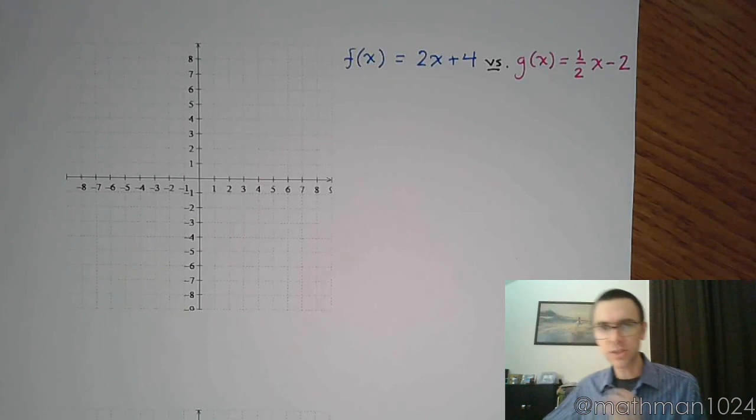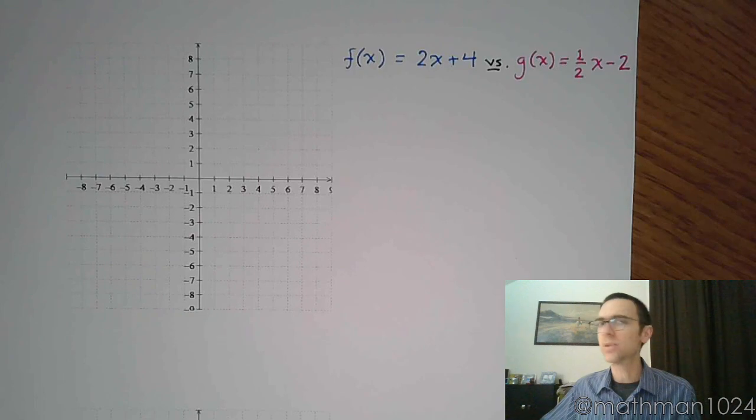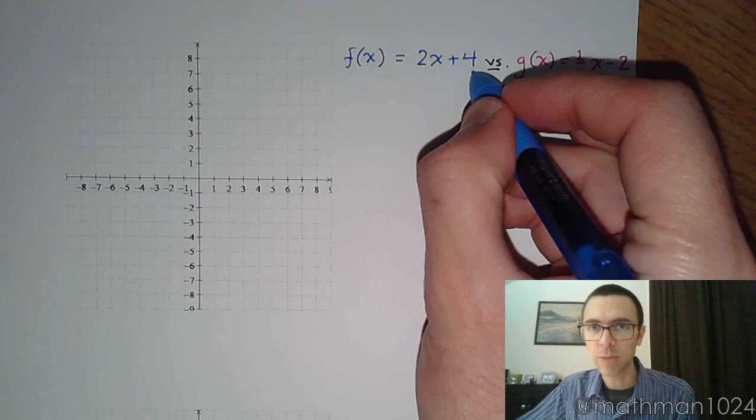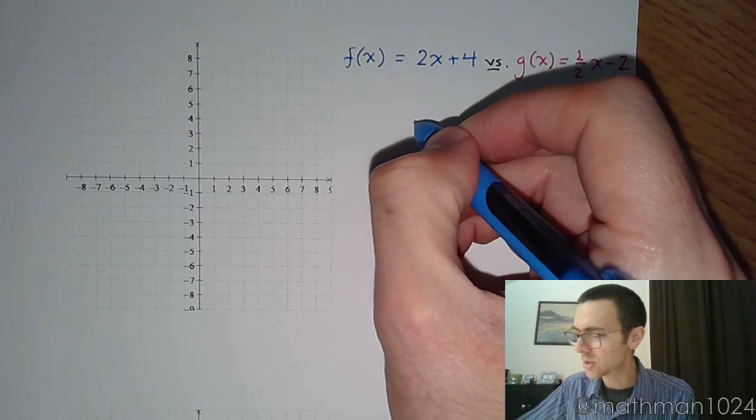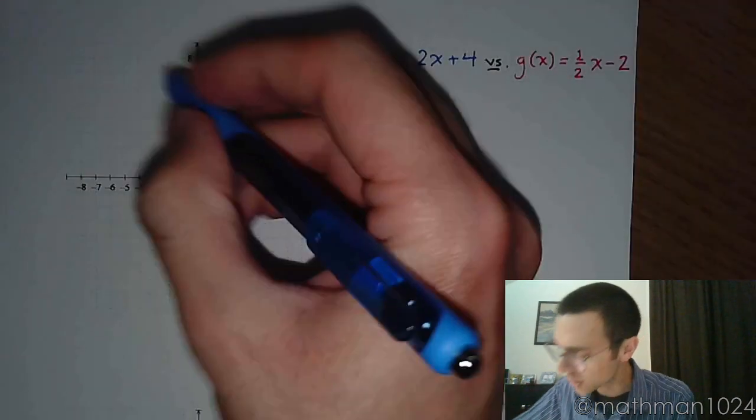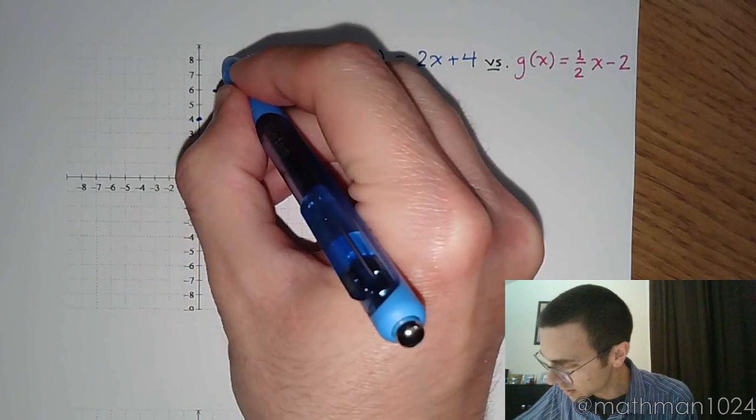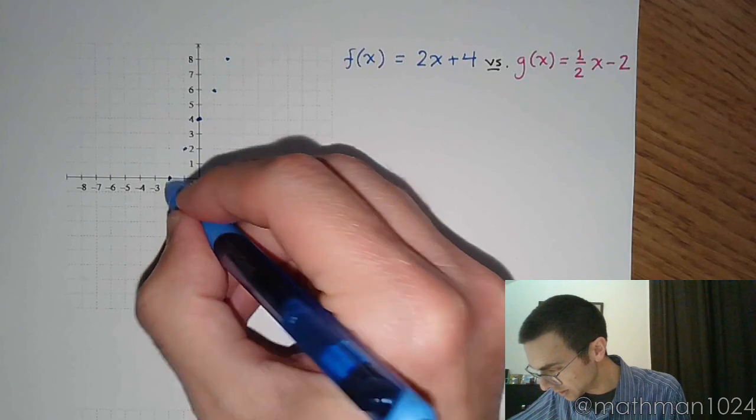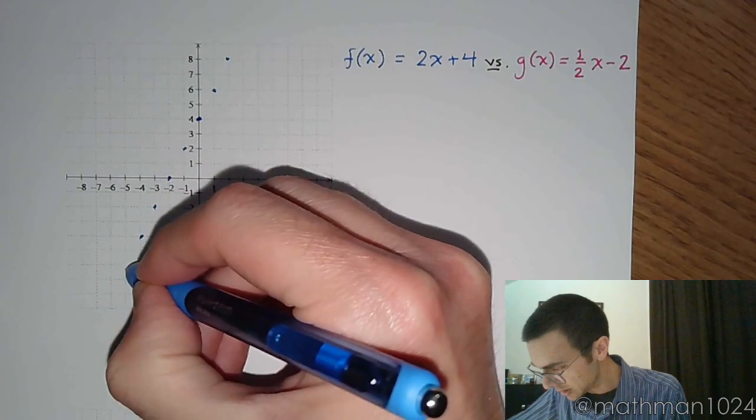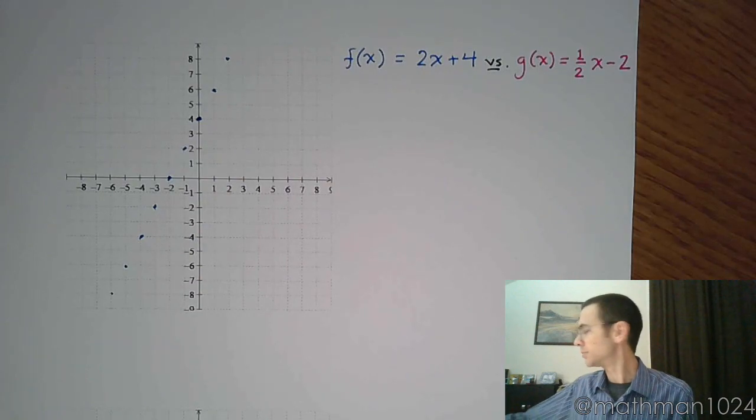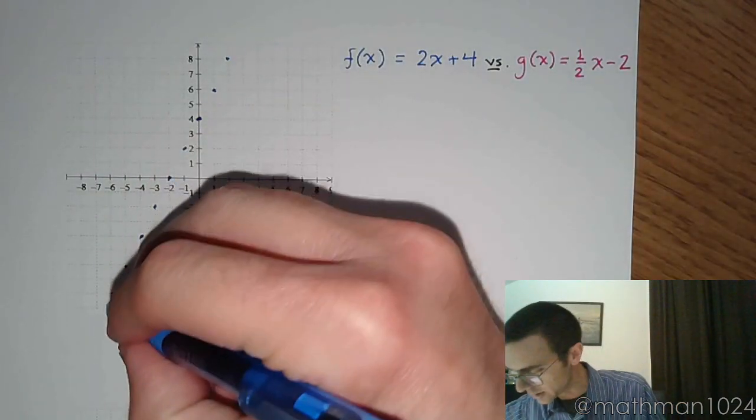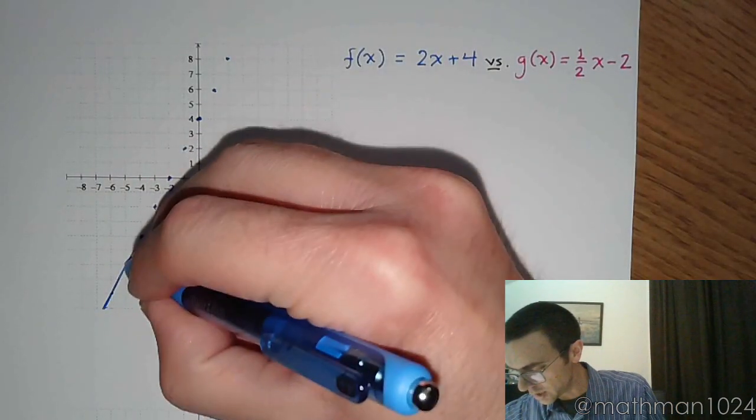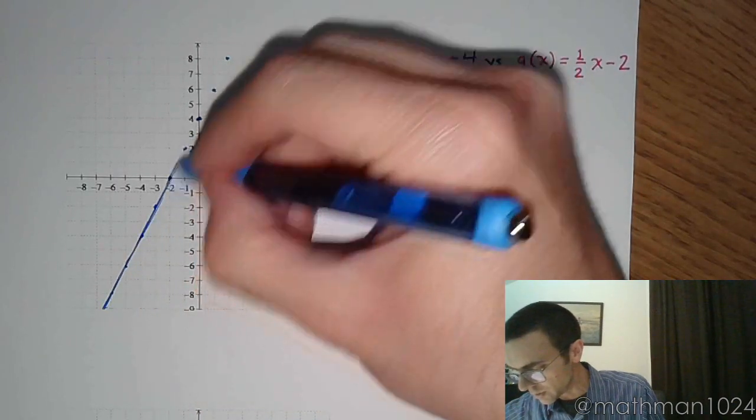I have listed in blue f of x as 2x plus 4. Remember that f of x is the same as y, so we can think about this in slope-intercept form where this is your y-intercept and this is my slope. So we're gonna start at 0, 4 with a slope of 2 and we're just gonna plot these points so that we can draw our line. Here we go with f of x.